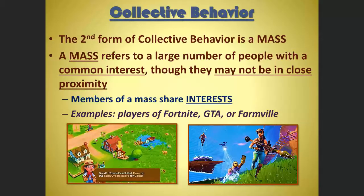So we just took our little crowd tangent. Remember, let's come back to where we started — we were looking at the three types of collective behavior: the crowd, the mass, and the public. We looked at the crowd and the four types of crowds.